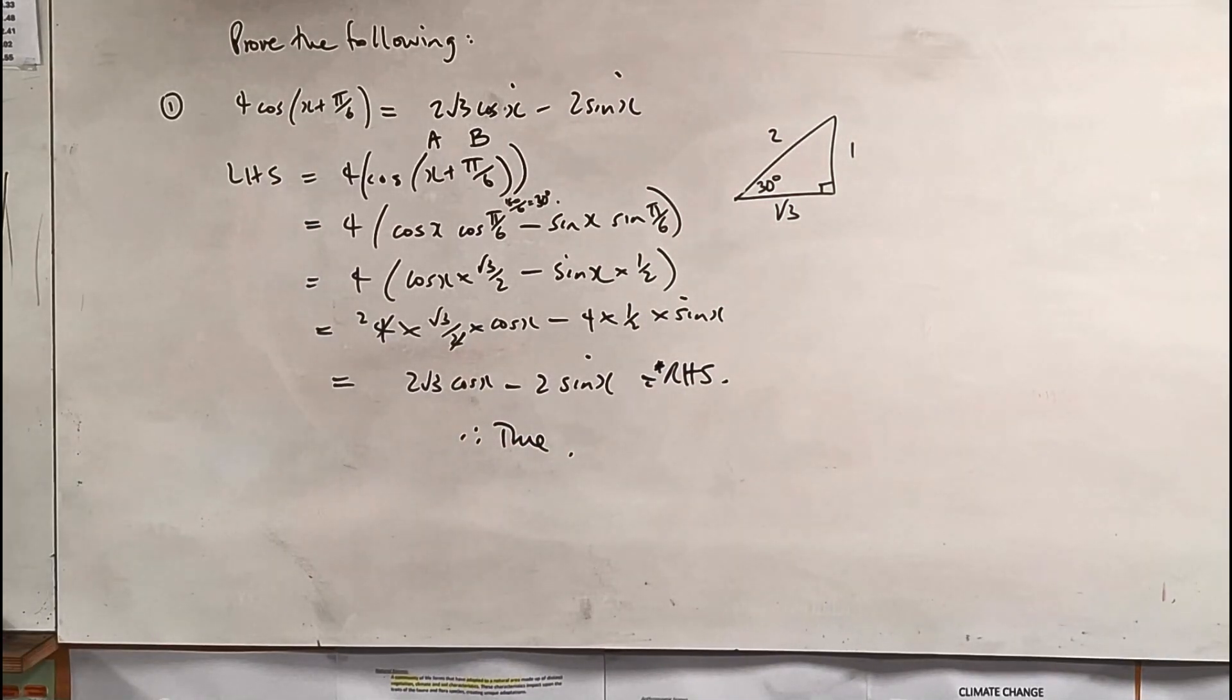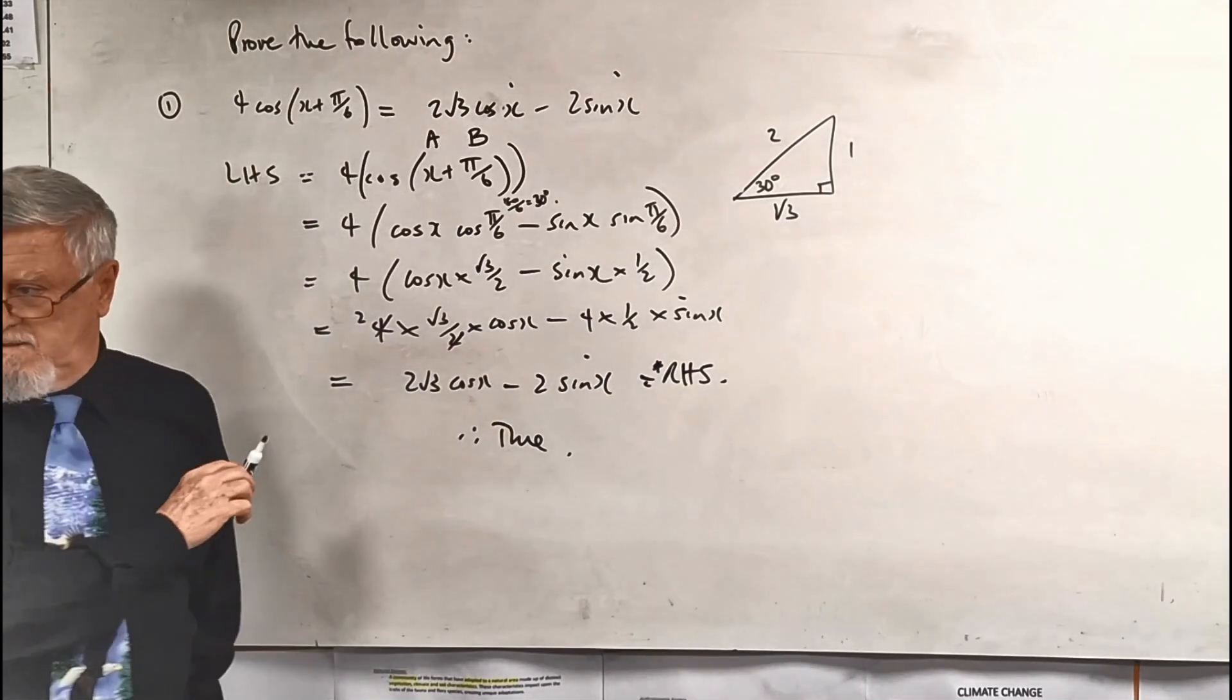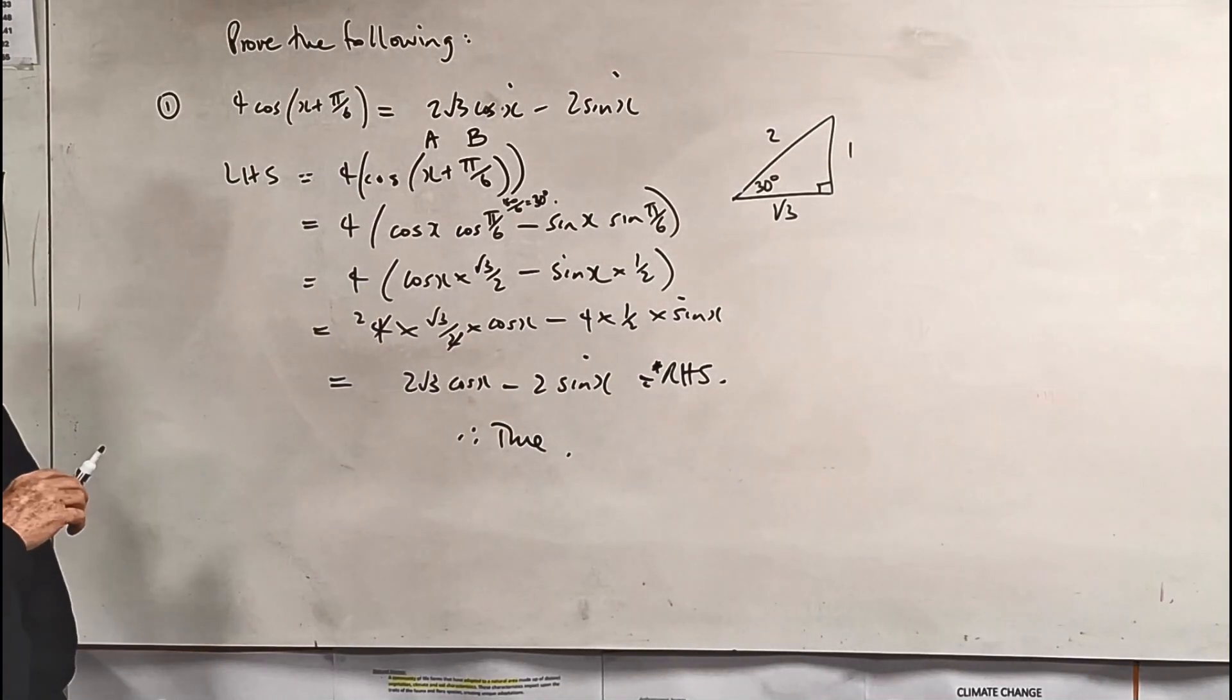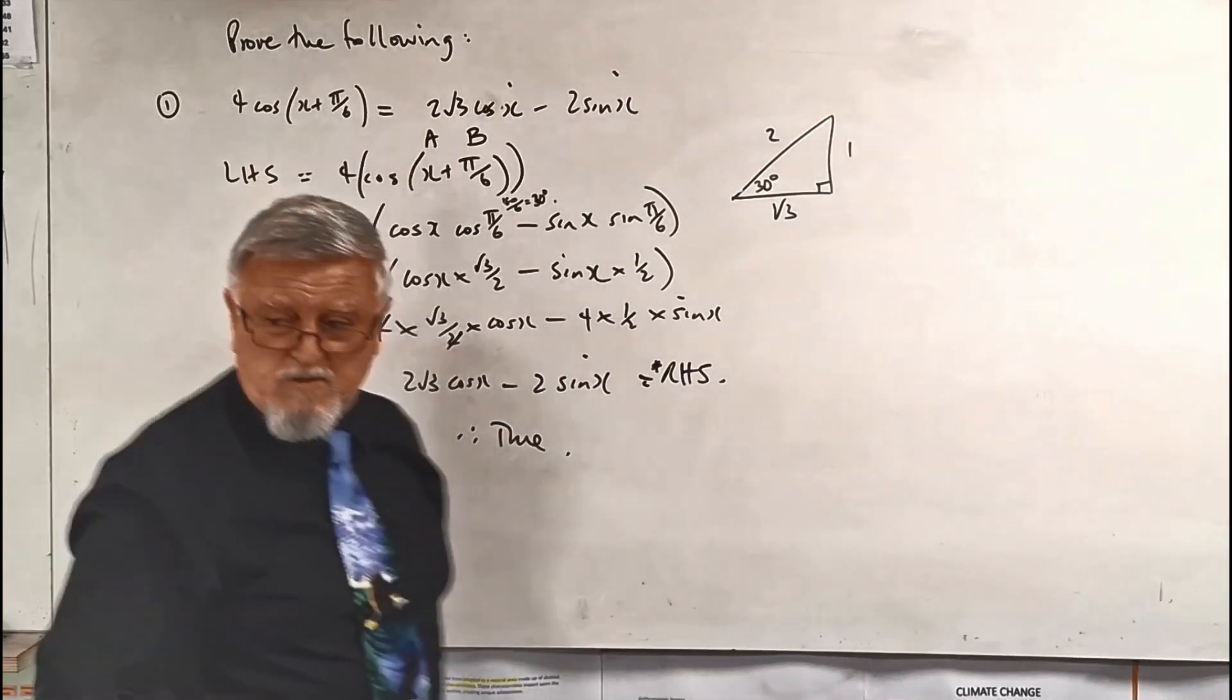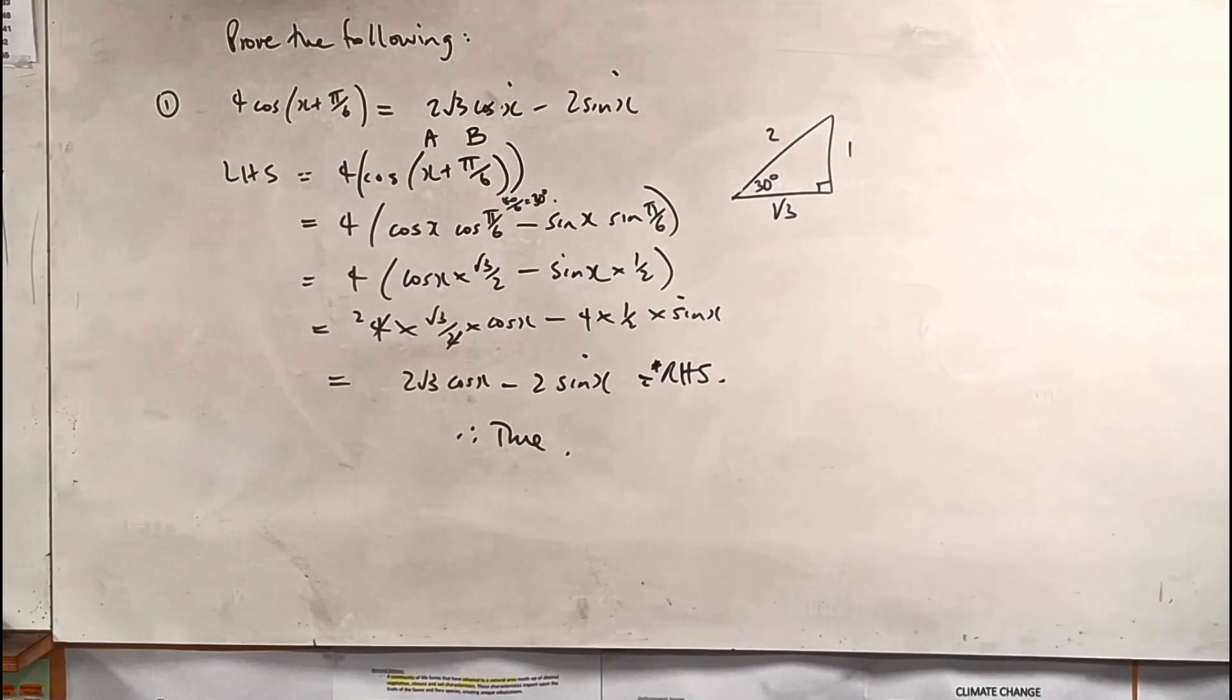And I haven't even looked at what the right hand side is because I know unless I made a stupid mistake I'm going to say that equals the right hand side, which is therefore true. We've proven that. Now by the way if I wanted to I can pick any number I want for x, I could pick π/2, I could put whatever I want in there and show it's true but that's not proving it's true. Question one done.